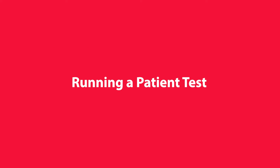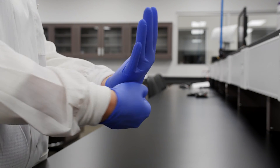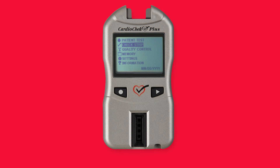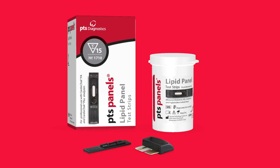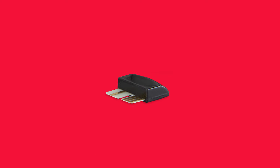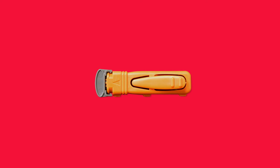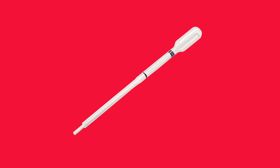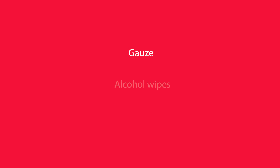Once you've verified that your analyzer is working properly by running a check strip and controls, you're ready to run a patient test. Put on a new pair of disposable gloves. Then gather all the items you'll need: the analyzer, PTS panels lipid panel test strips, memo chip, lancet, PTS collect capillary tubes (40 microliters), gauze, alcohol wipes, and a biohazard container.